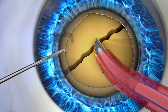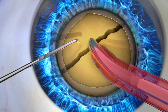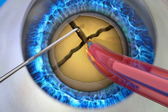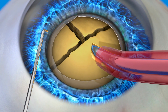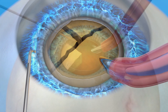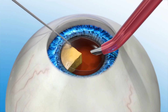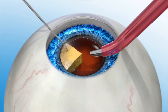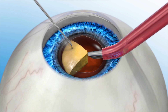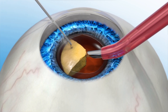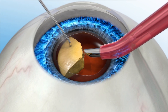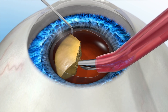The next step in the procedure is the removal of the cloudy lens. During a manual cataract procedure, the cataract is broken up into small pieces in preparation to remove it. A handheld instrument may be used first to break up the lens into a few large pieces, then ultrasonic energy is used to break it up into smaller pieces before it can be suctioned out. It's important to note that when less energy is used in the eye to remove the cataract, the quicker the vision will recover, and less energy also reduces the chances of complications.